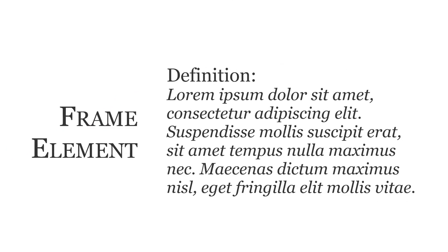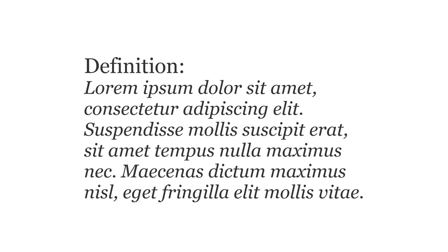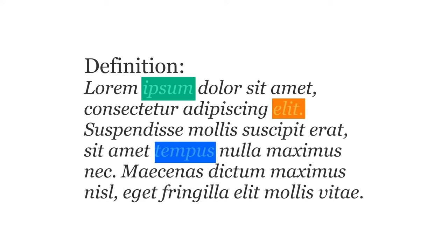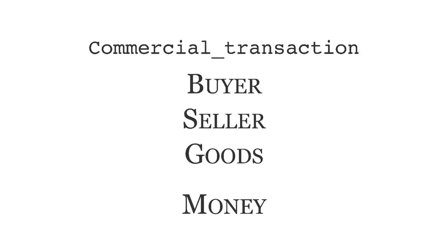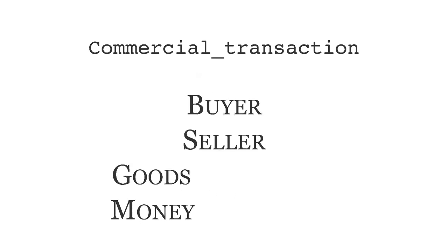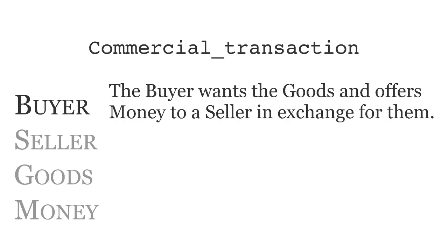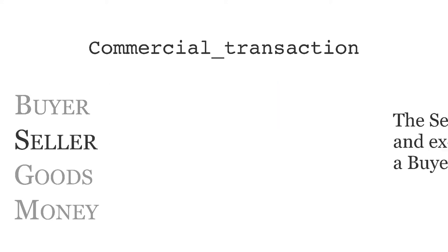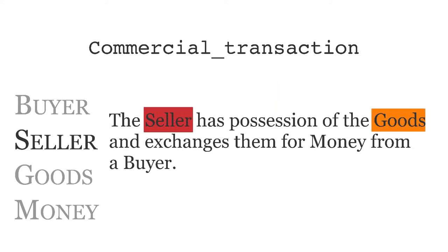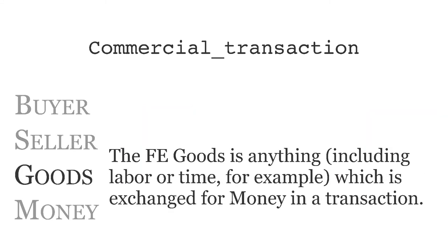Each frame element also features a short definition. The definition is usually built to emphasize how a frame element relates to the others in the scene. Returning to the commercial transaction frame, the four elements are defined as follows. Buyer: the buyer wants the goods and offers money to a seller in exchange for them. Seller: the seller has possession of the goods and exchanges them for money from a buyer.